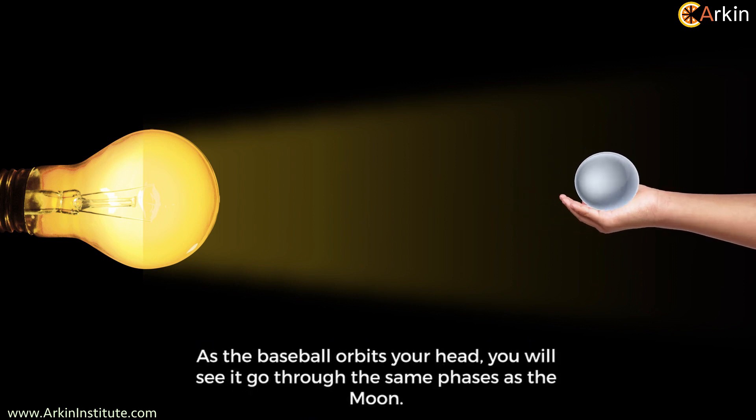Hold the ball so that it is between your face and the lamp. Now move the ball around your head at arm's length — do this slowly and move your arm from right to left. As the ball orbits your head, you will see it go through the same phases as the moon. So we can now answer the question: which of these moons are waxing, or becoming larger? A and B are becoming larger — that is waxing.